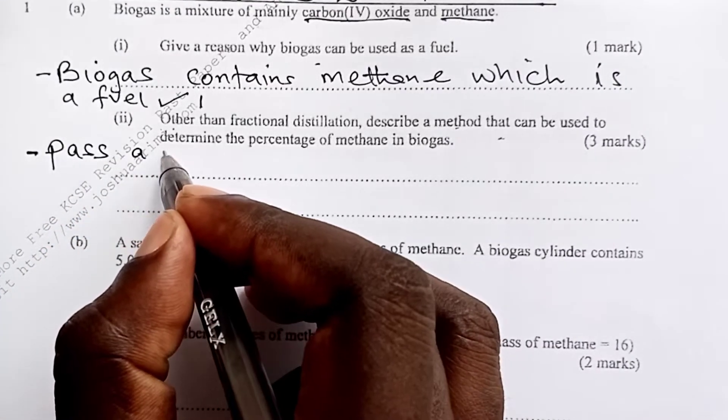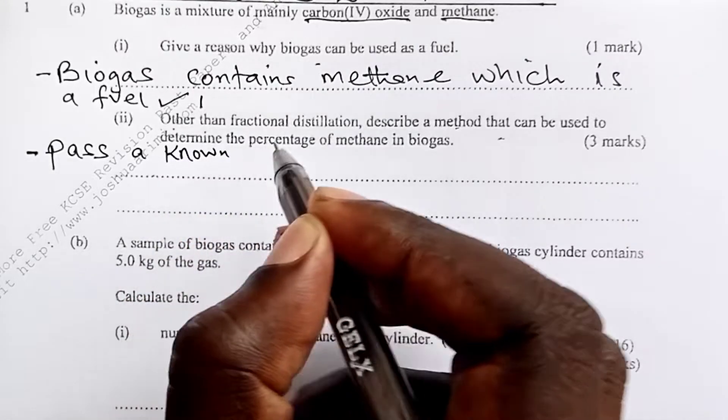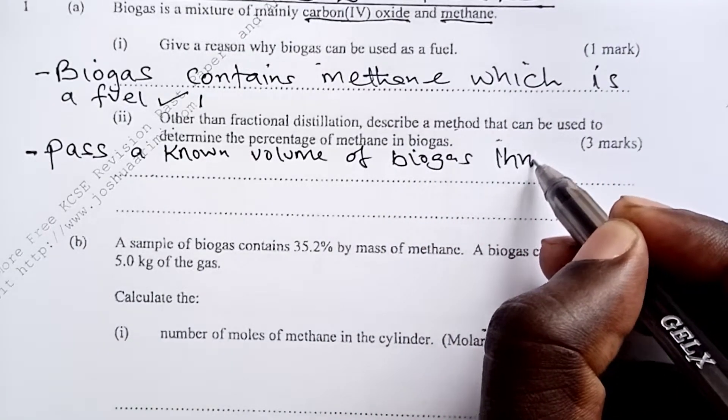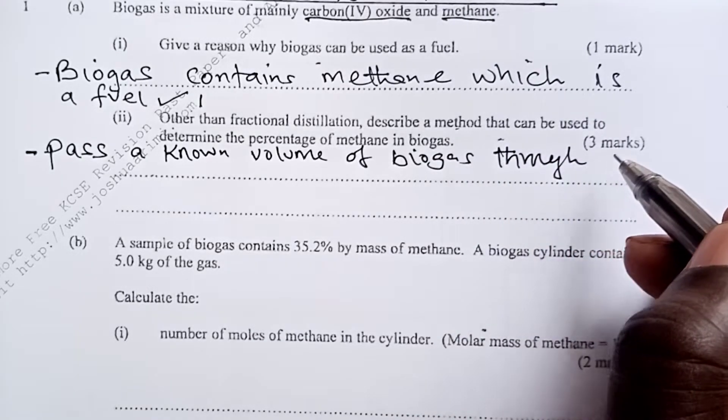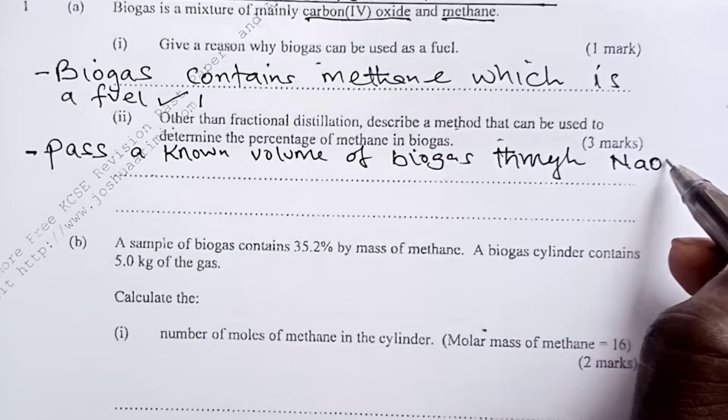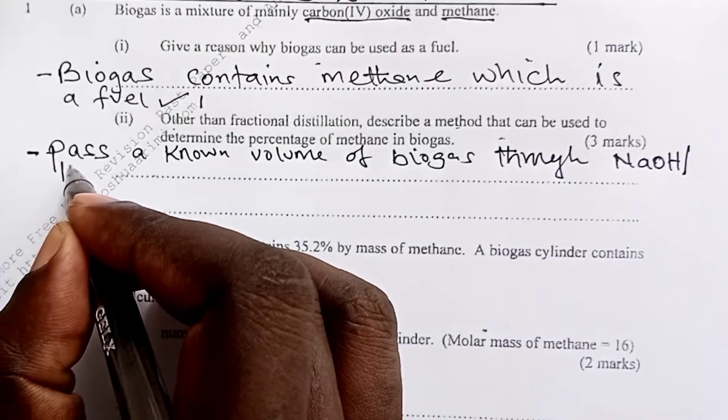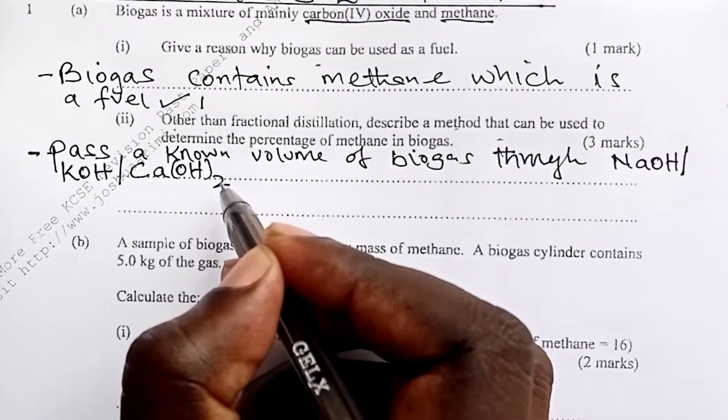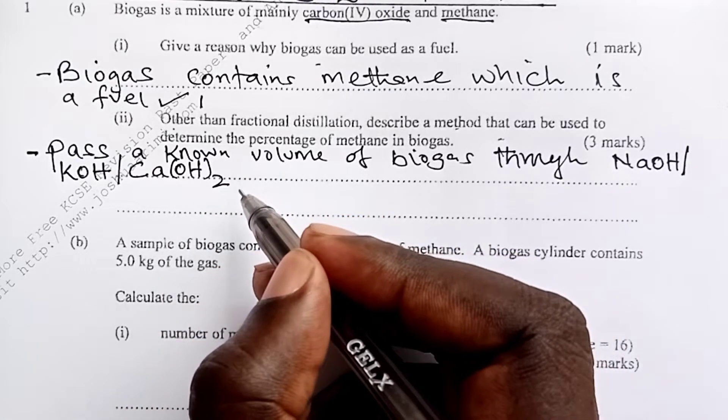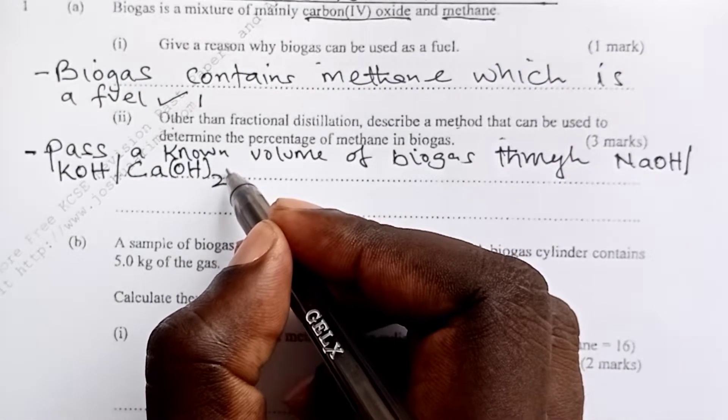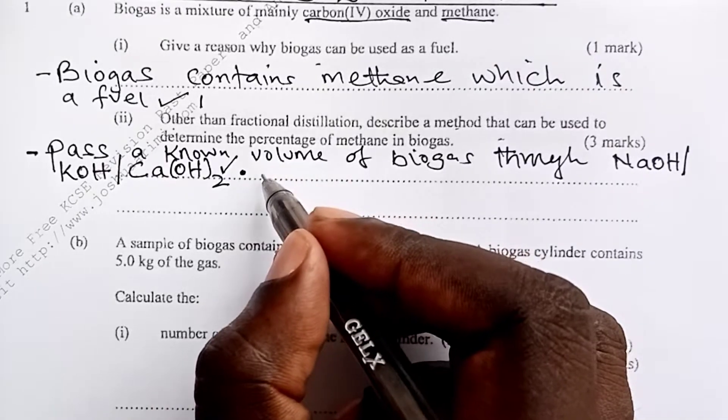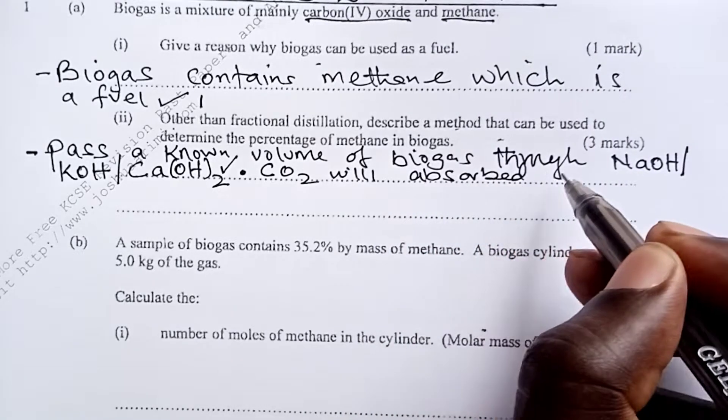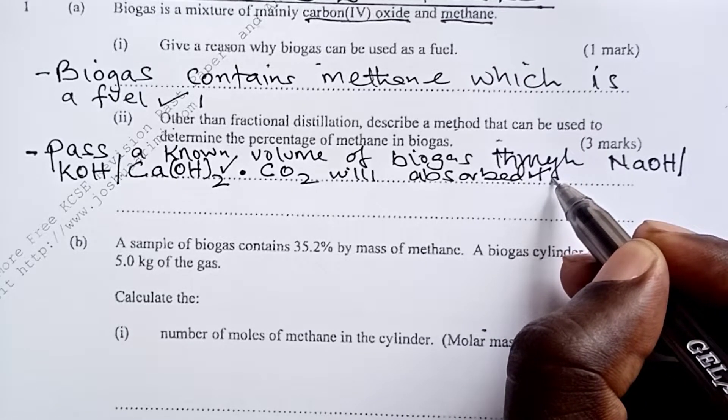So the expected answer would have been that pass, of course we have to know the volume, so pass a known volume of biogas. You pass it through any alkali. For this purpose, we would use either sodium hydroxide, we can use potassium hydroxide, or we can even use calcium hydroxide. All these would be able to absorb carbon-4 oxide. So writing that was good enough for one whole mark, and then you continue to explain that carbon-4 oxide will be absorbed.